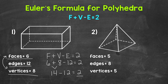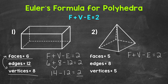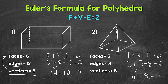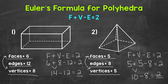Let's move on to number two: a square pyramid — five faces, eight edges, and five vertices. So: five faces plus five vertices minus eight edges equals two. Five plus five is ten, minus eight is two. There are five faces and five vertices, so if we combine those we get ten, which is two more than eight edges.